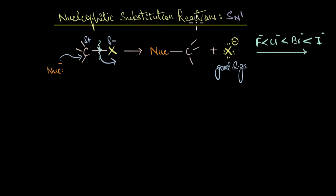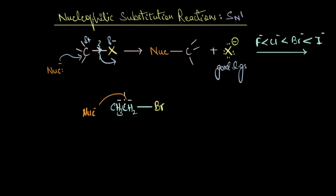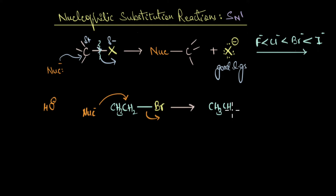Nucleophilic substitution reactions are an extremely powerful tool to convert one substrate to another. For example, take a primary alkyl halide such as CH₃CH₂Br. Depending on the nucleophile, it can attack this carbon and eliminate the bromide ion to form a substituted product. If the nucleophile is a hydroxide ion, it substitutes the bromide ion to form a primary alcohol. If the nucleophile is a methoxide ion (CH₃O⁻), the final product would be an ether: CH₃CH₂OCH₃.